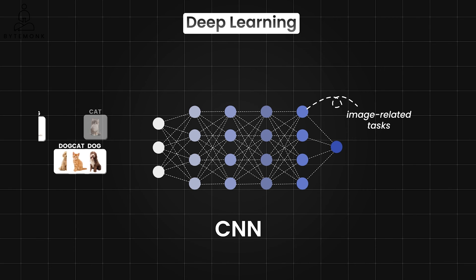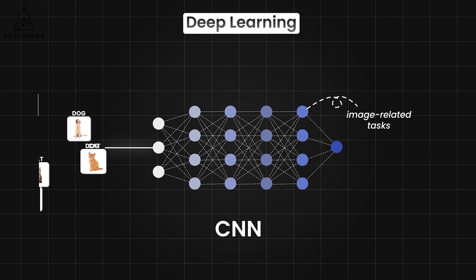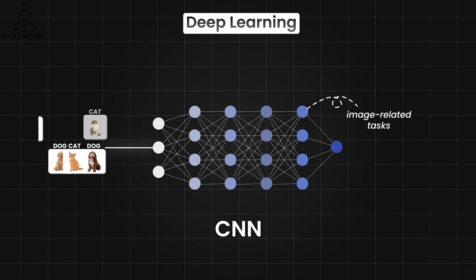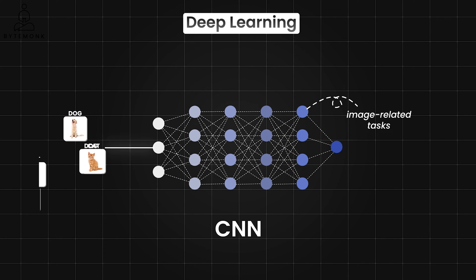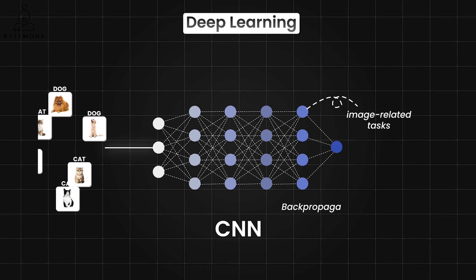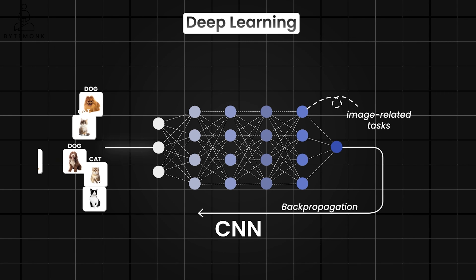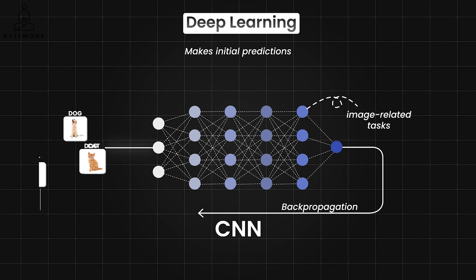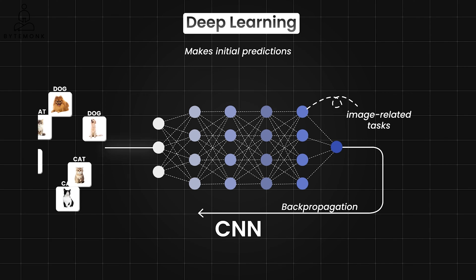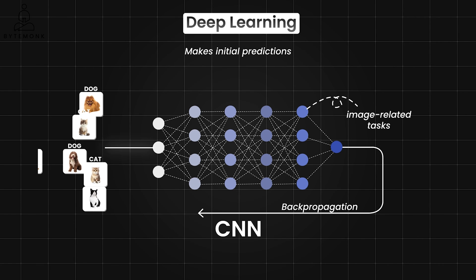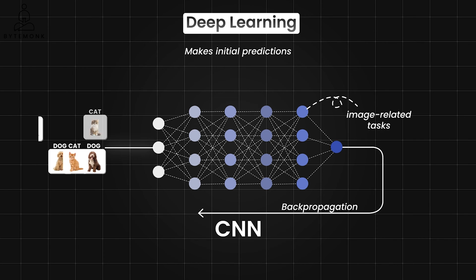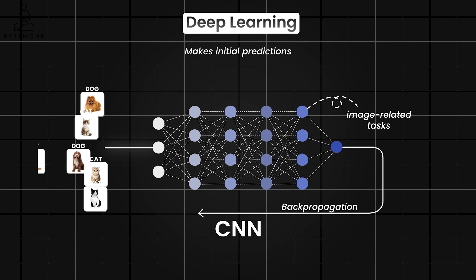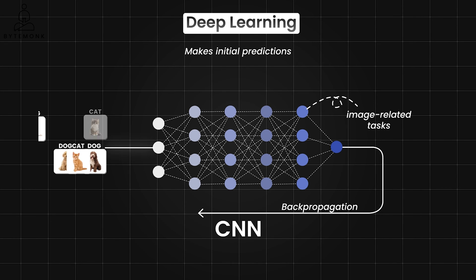The labeled cat and dog images are fed into the CNN. In the first layers, the CNN might learn to recognize edges, shapes, and basic patterns. As we go deeper, it starts identifying more complex features like eyes, ears, and specific fur textures. Finally, we have backpropagation — this is where the magic happens. The CNN makes initial predictions on the images, and we compare these predictions to the actual labels such as 'cat' or 'dog.' If there are errors, the model adjusts its internal weights and biases to improve accuracy. This process of backpropagation iterates for many epochs, or full cycles through the data, until the model achieves a good level of accuracy in distinguishing cats from dogs.